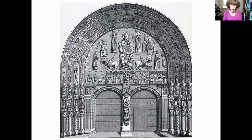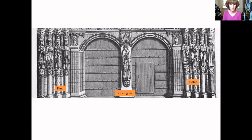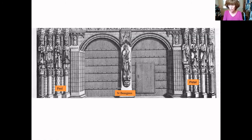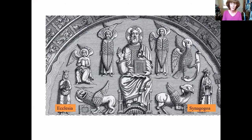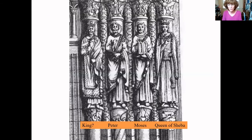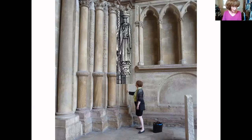The 1160s door is one of the rather wild and woolly Burgundian portals that added new features to the Chartrain model. The New Testament has interrupted the Old Testament unity of the embrasures with Peter and Paul, and Saint Benignus gives a more local and contemporary focus. Another innovation is Ecclesia and Synagoga in the tympanum. The Queen stood next to Moses on the flank of the embrasure and her foot must have been highly visible.